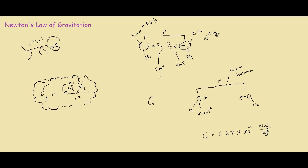As you can see, this equation is not that hard to use. In any physics problem, when you know the masses of two objects and you know the distance apart, you can find the force on them. For example, if you have one human here and one human here, and you know their masses and the distance apart, you can actually calculate the force of gravity on each other. And that's basically all you need to know about Newton's law of gravitation.